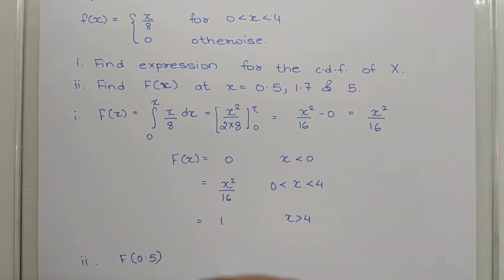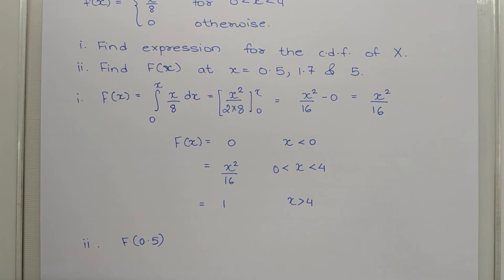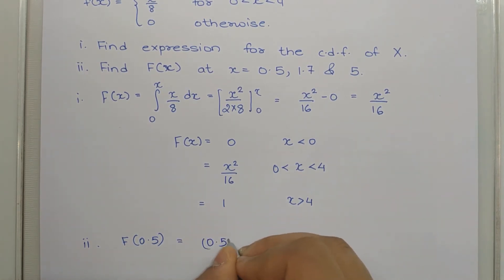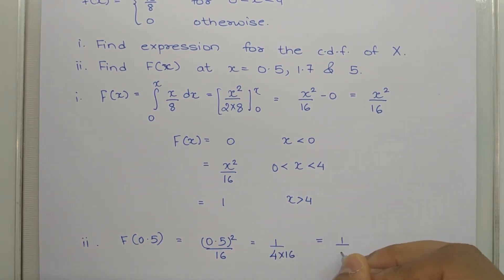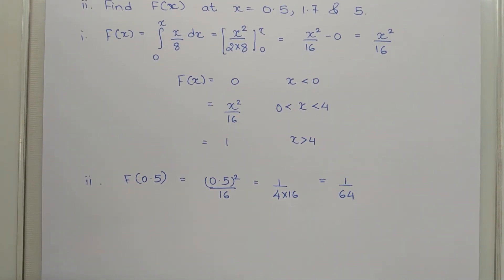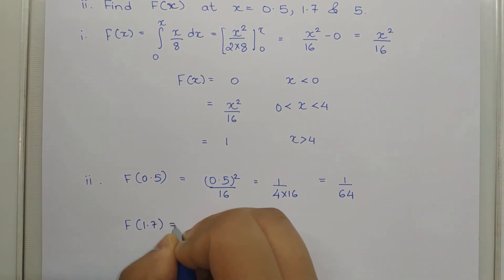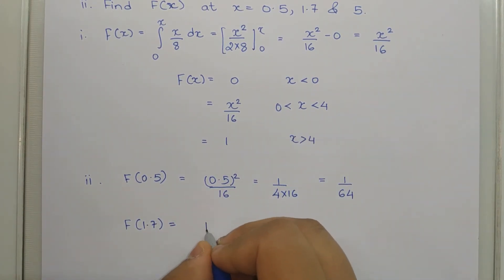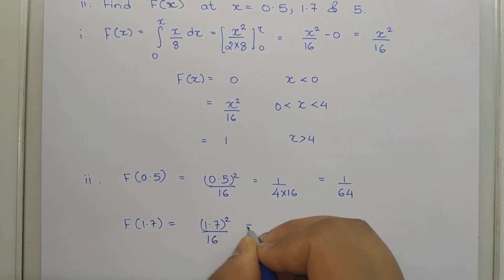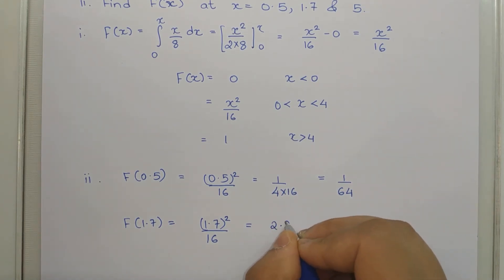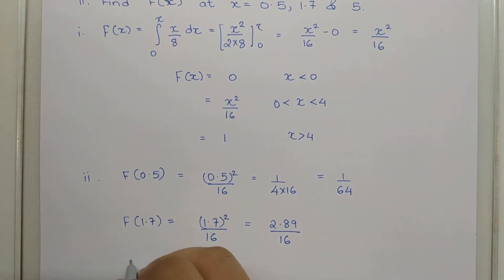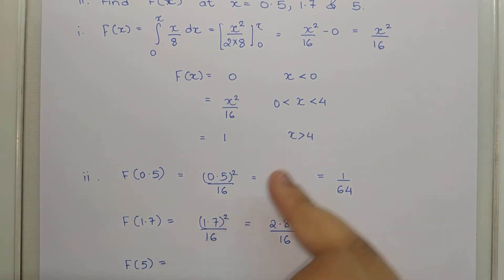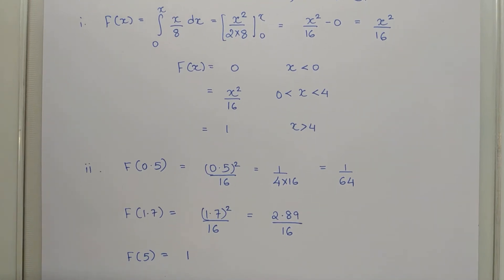Now evaluating: F(0.5) = (0.5)²/16 = (1/4)/16 = 1/64. Next, F(1.7) = (1.7)²/16 = 2.89/16. Finally, F(5): since 5 > 4, the value is 1.